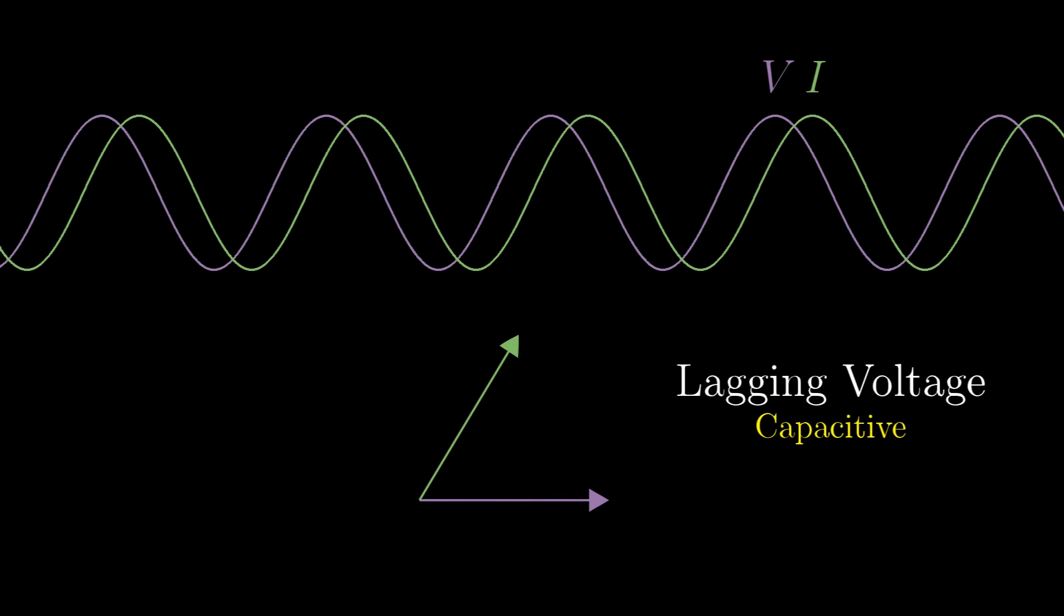With our phasors, leading and lagging is measured in the counter-clockwise direction, the more clockwise of the two being the leader.